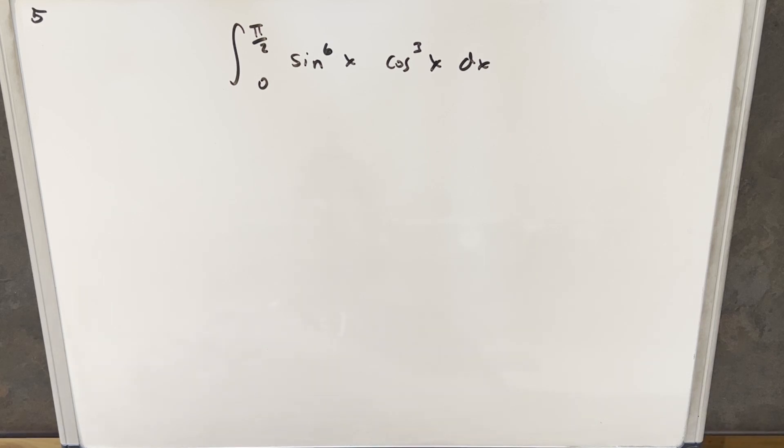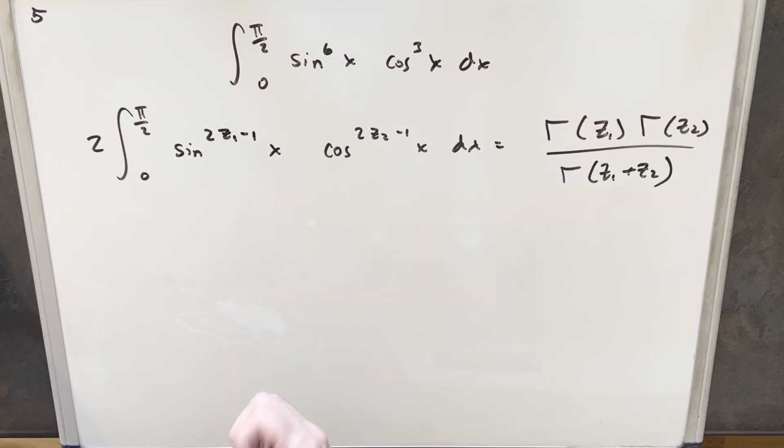But what I want to do is something a little different. I want to solve this using the beta function, and let's look at the formula for that right now. We have here our formula for the beta function, and you'll notice it's a little different than the formula that's probably more familiar that goes from 0 to 1.